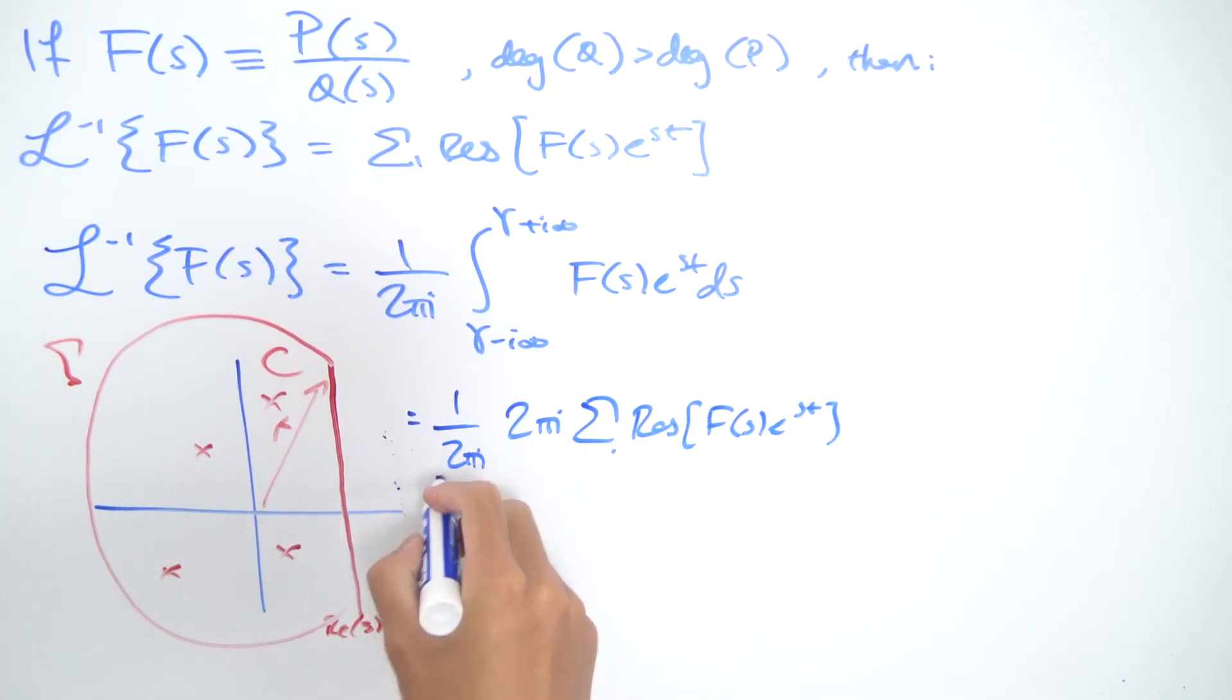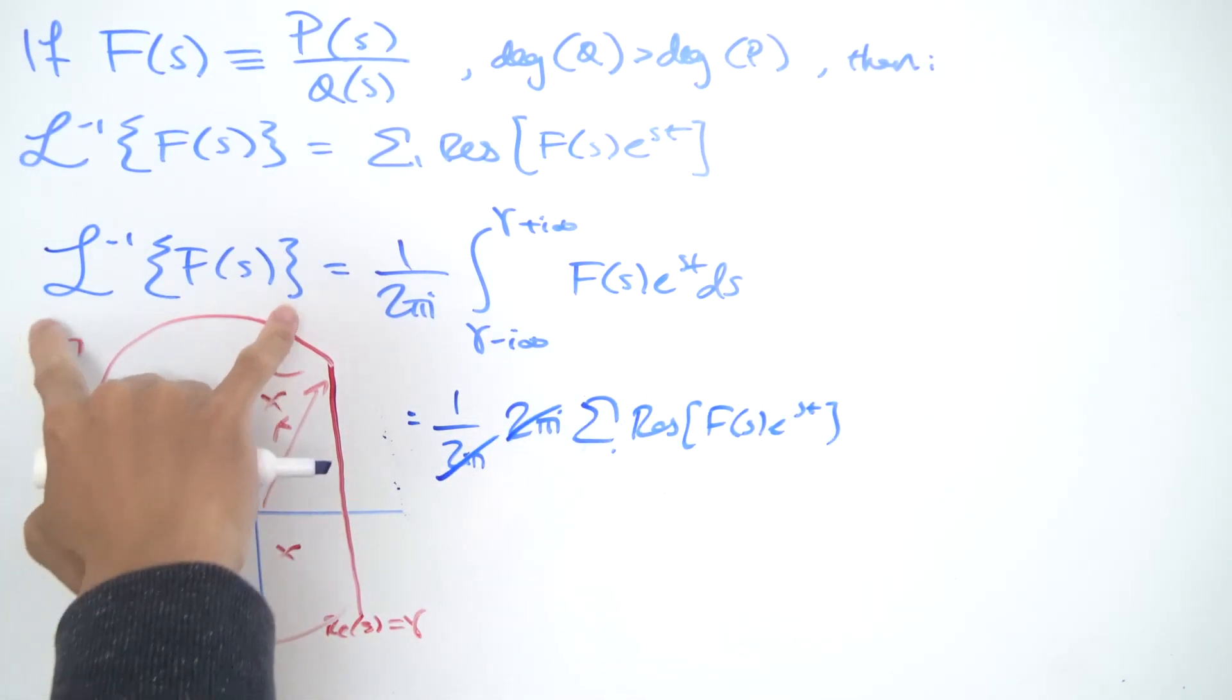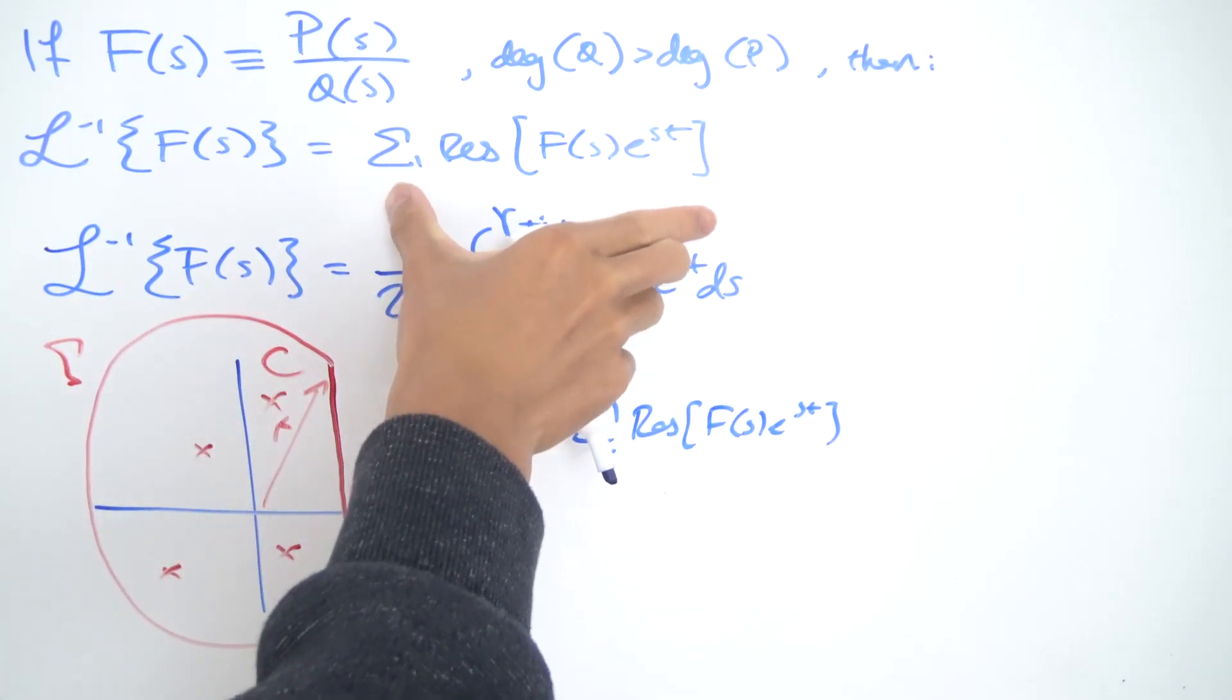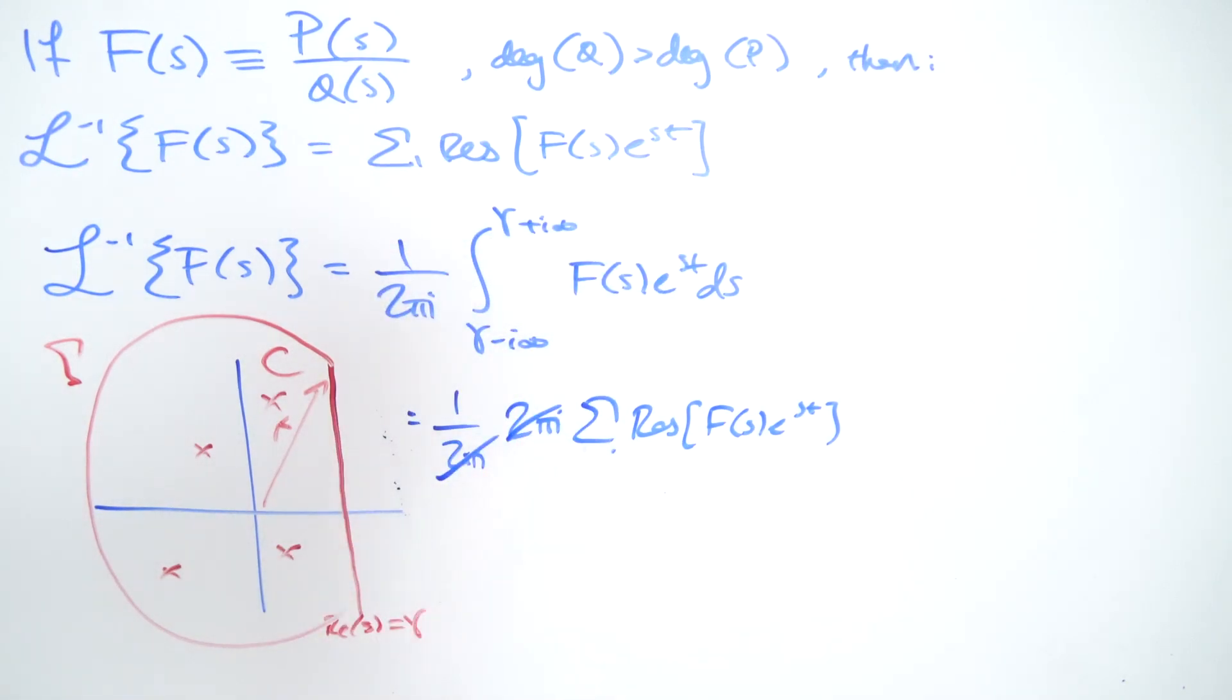And obviously, these 2πi's cancel out. And indeed, you get that the inverse Laplace transform of capital F(s) is just given by the sum of all the residues of F(s) times e^(st).